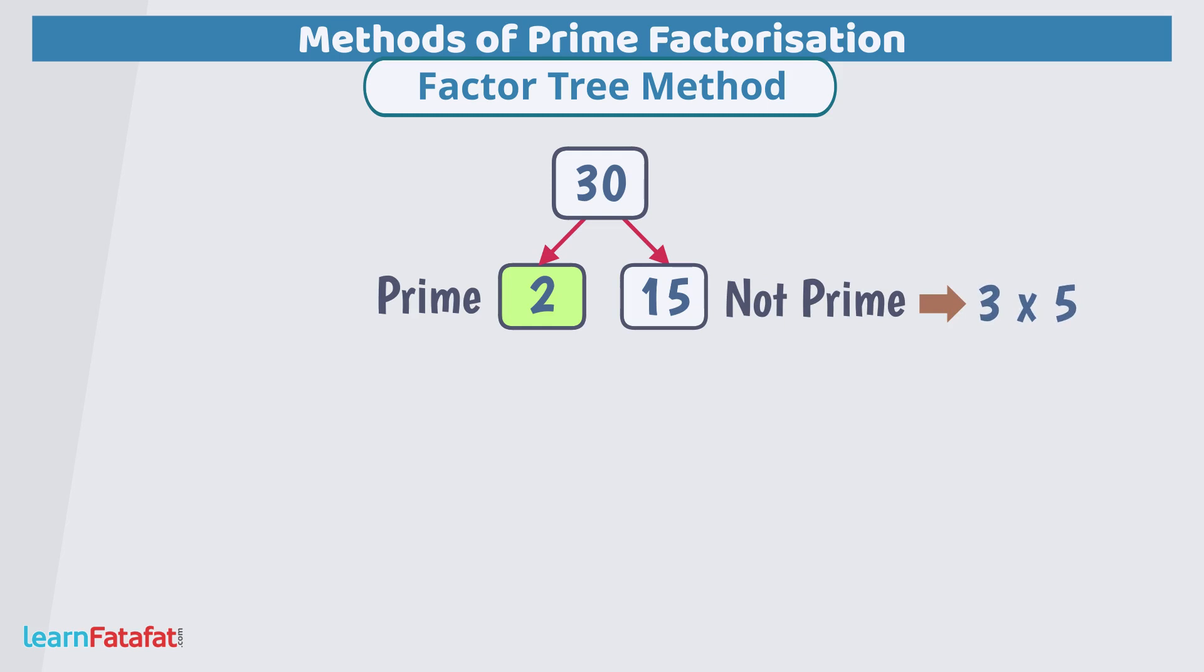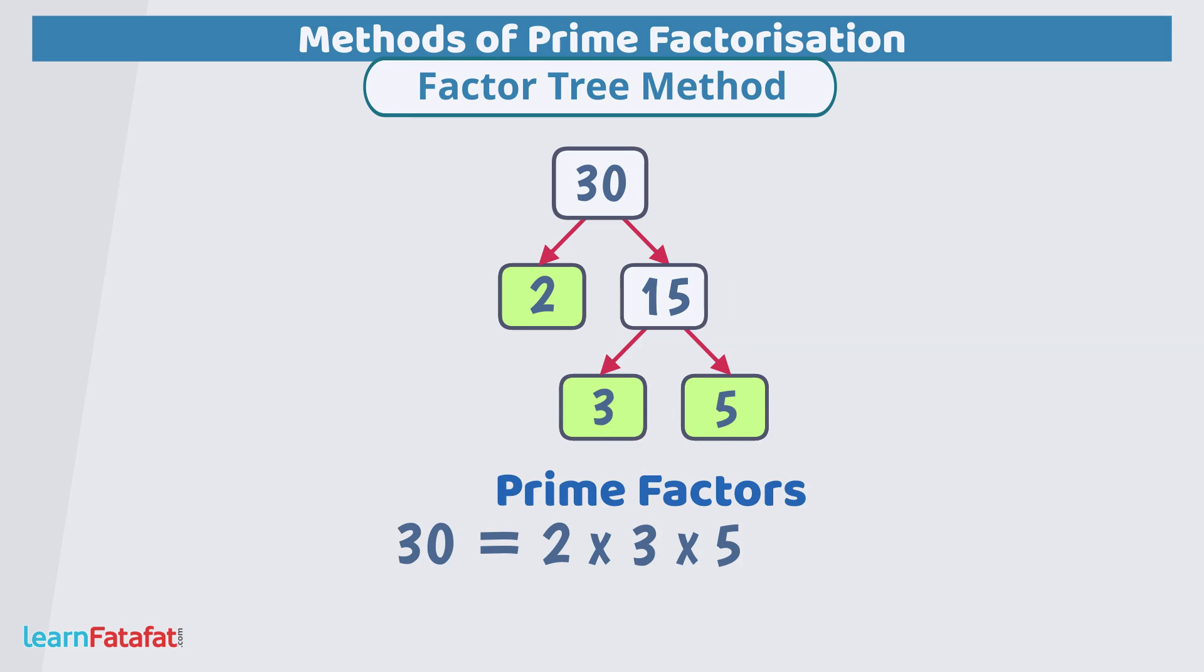So, let's make 2 branches from 15 and write 3 and 5 as shown. Both are the prime numbers, so we will stop here. Thus, we get prime factors 2, 3 and 5. This arrangement looks like an upside down tree. Thus, the name of this method is factor tree method.